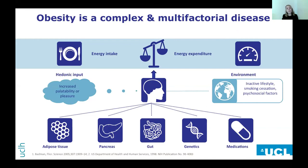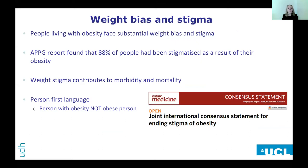Obesity is a complex multifactorial disease with signals from the gut regulating appetite and signals from the periphery, but there's an interaction with genetics and the environment that really alters people's predisposition to developing obesity. People with obesity face substantial weight bias and stigma, which actually really contributes to their ill health. The concept that shaming a person will help them lose weight is absolutely incorrect — obesity stigma causes an increase in cortisol, a stress response, and drives an increase in body weight. We really need to be using person-first language, and there was a consensus published by Nature Medicine on ending obesity stigma.